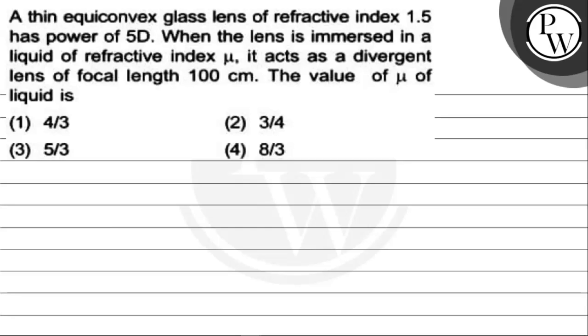Hello everyone, last question. The question says a thin equiconvex glass lens of refractive index 1.5 has power of 5 diopter. When the lens is immersed in a liquid of refractive index mu, it acts as a divergent lens of focal length 100 cm.